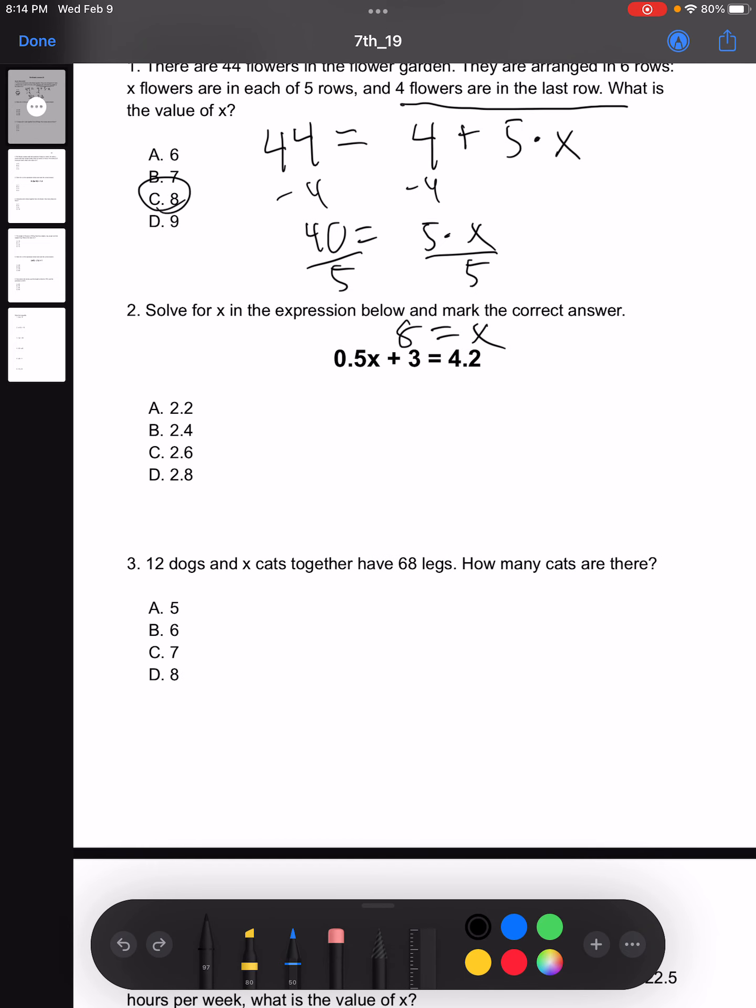Moving on to number two. Solve for X in the expression below and mark the correct answer. 0.5X plus 3 is equal to 4.2. What we can do first is subtract 3 from both sides and we get 1.2. Now all we have to do to solve for X is divide both sides by 0.5. And let's go ahead and do this.